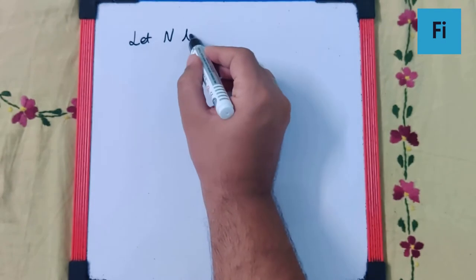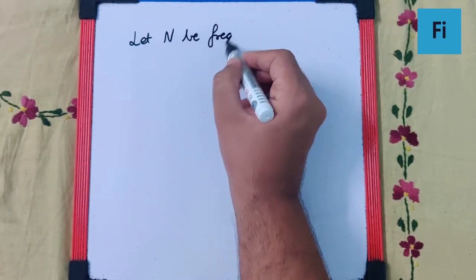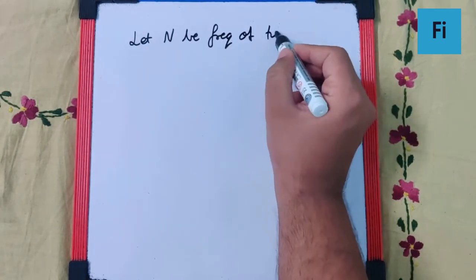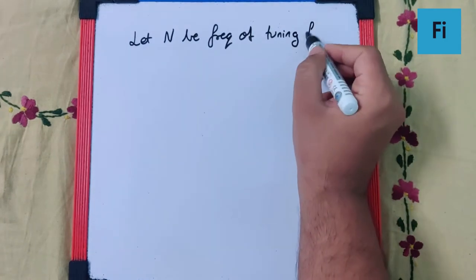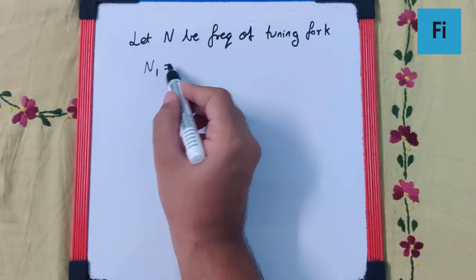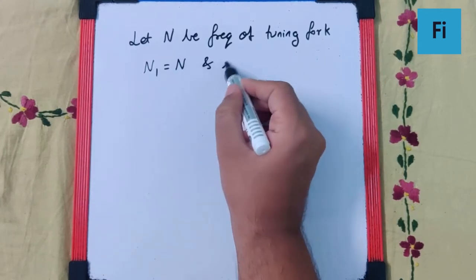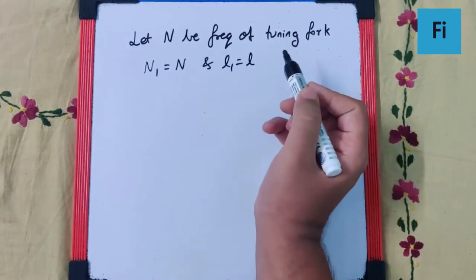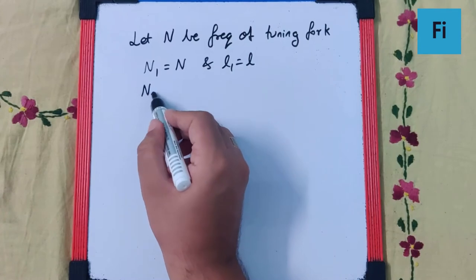N be the frequency of tuning fork. We are using capital N for the tuning fork. For the first case, N1 is N and L1 is L, the original length. But for the second case,